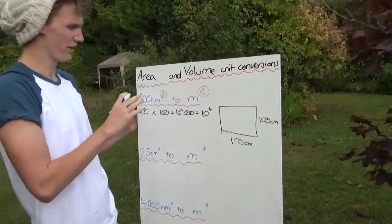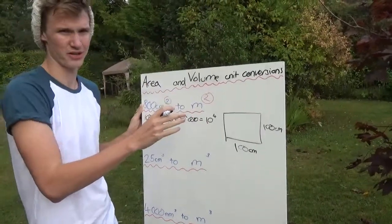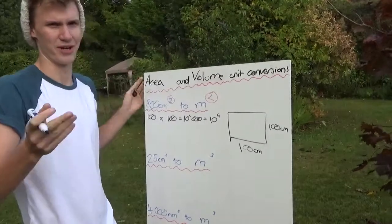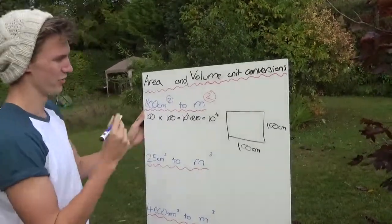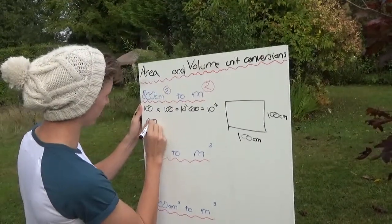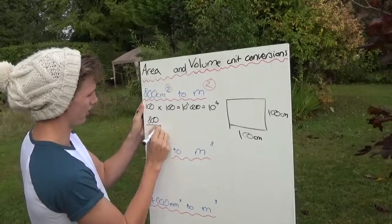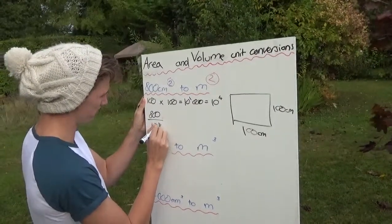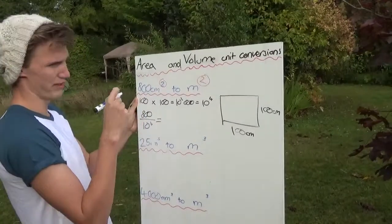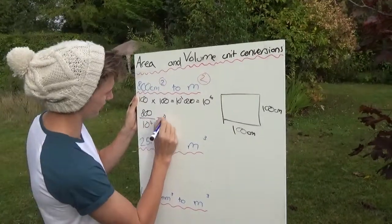We know that the measurement in meters squared is going to be smaller than the measurement in centimeters squared, because a meter squared is bigger than a centimeter squared. We know it must be a division, so we're going to do 800 over 10 to the 4. That is equal to, if we bring the power up, we make it a minus, so that's 800 times 10 to the minus 4.